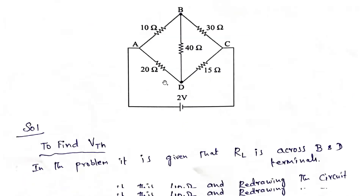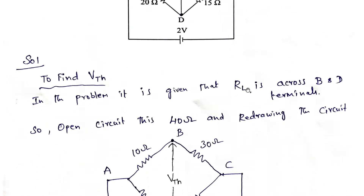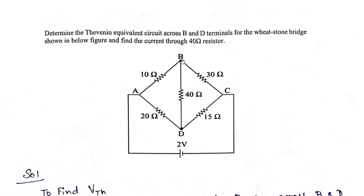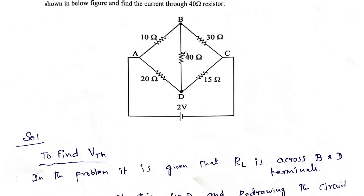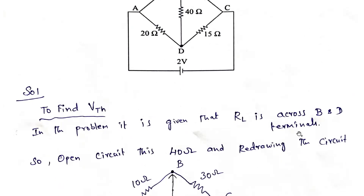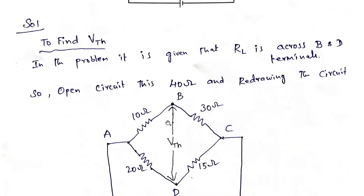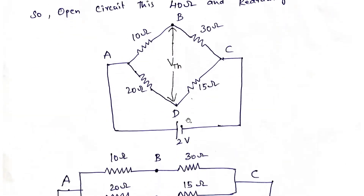In Thevenin's theorem, the first step is to find out VTH or RTH. Now we are going to find out VTH. RL is nothing but 40 ohms. First, we need to open circuit the load terminals — that is RL, which is 40 ohms. We open circuit it. Next, we need to find out what is VTH.